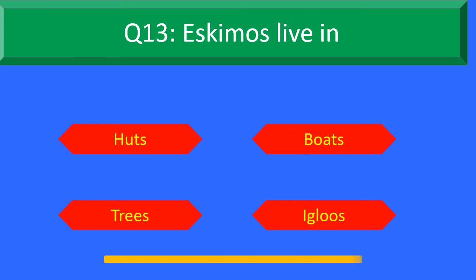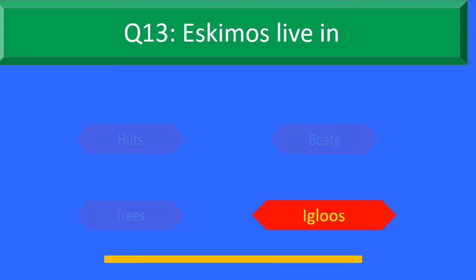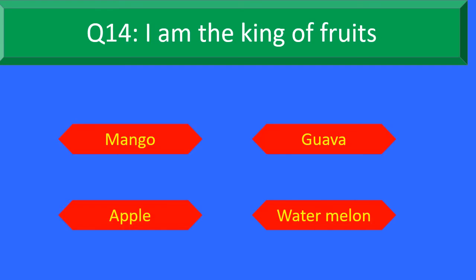And your time is up. The right answer is Option D: Igloos. Eskimos live in Igloos. Moving to Question Number 14.